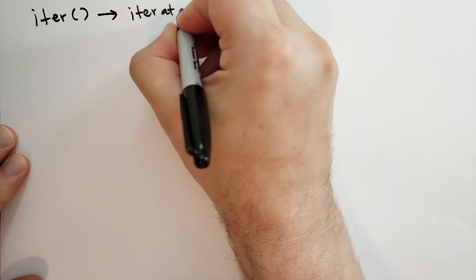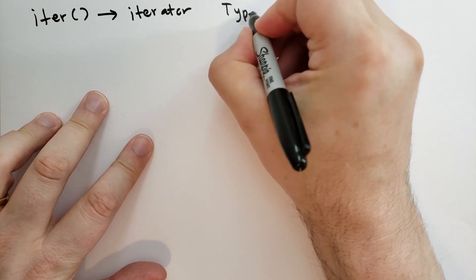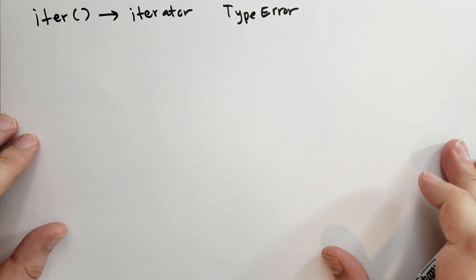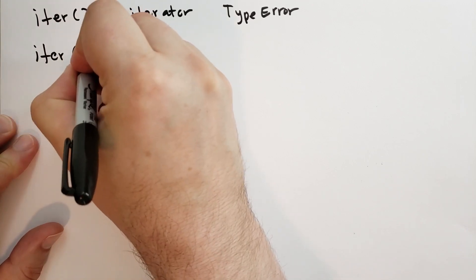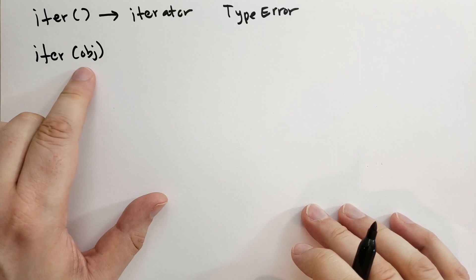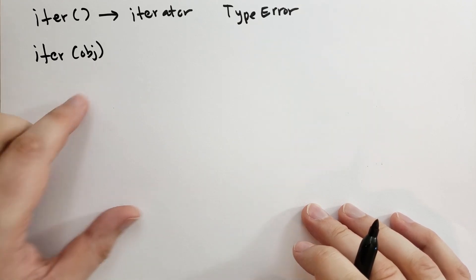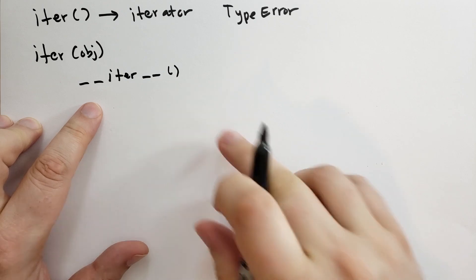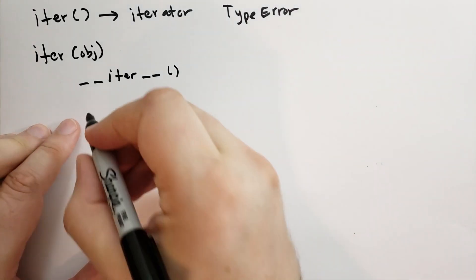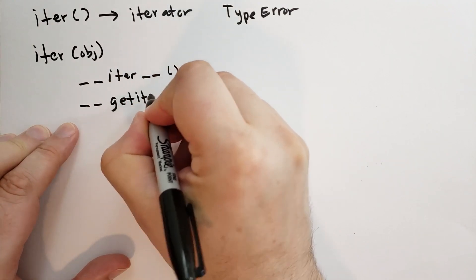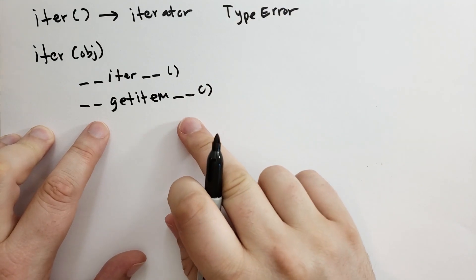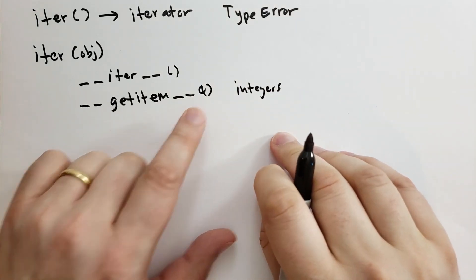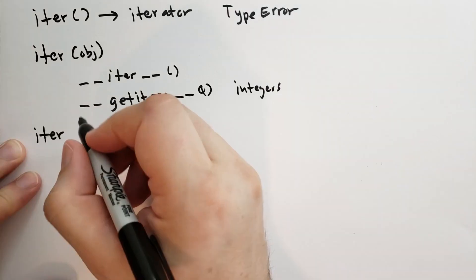Iter always returns an iterator. If it can't return an iterator, it'll raise a type error instead. Remember, if you pass an iterator into iter, you'll get the same iterator back. When you call iter with one object, it will do its best to figure out how to create an iterator that will iterate across that object. The object should support the special method iter. If it doesn't have iter, it should have at least getitem. This getitem must support integers — so it's going to try to pass in 0, 1, 2, and 3 and see what it gets. All the sequences in Python support this.